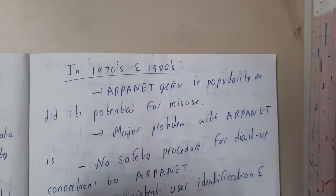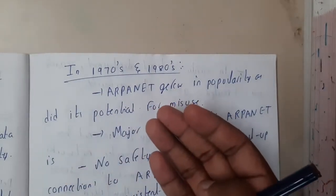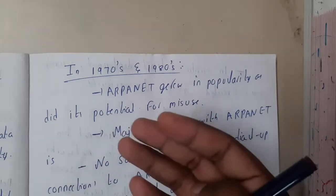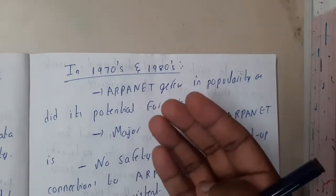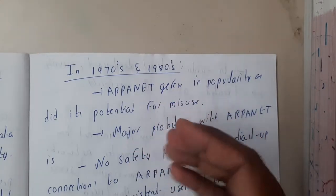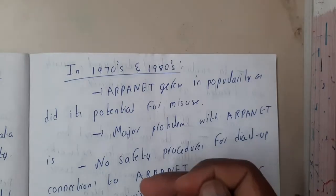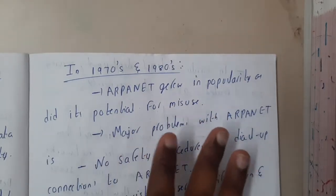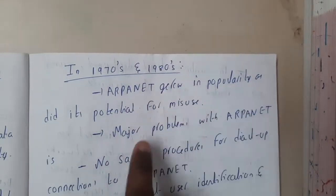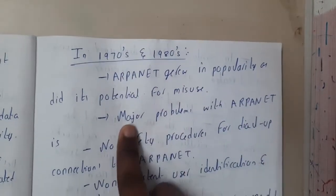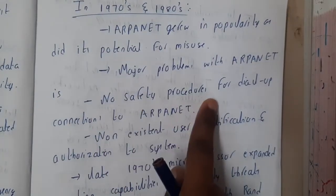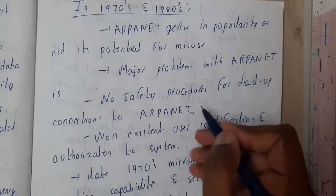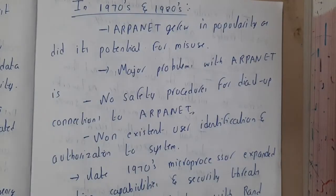In the 1970s and 80s, the method Larry Roberts developed grew a lot of popularity. The major disadvantage was that whenever something becomes popular, everyone tries to exploit it — they try to find loopholes. It started being misused. A major problem was that there was no safety procedure for a dial-up connection, meaning data was sent directly without checking whether it was secured or not.